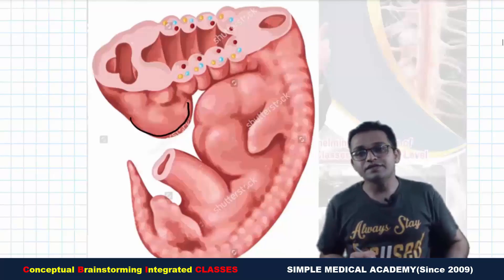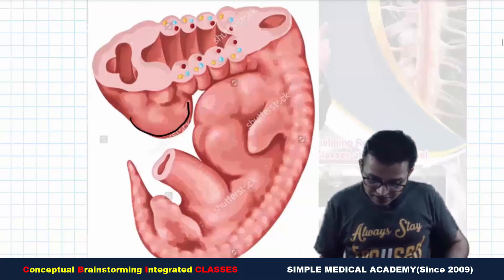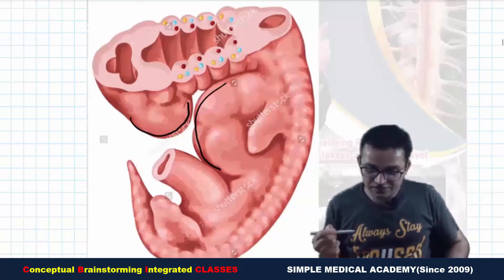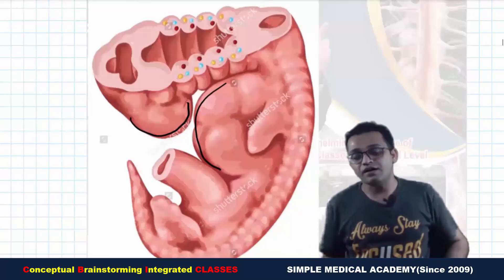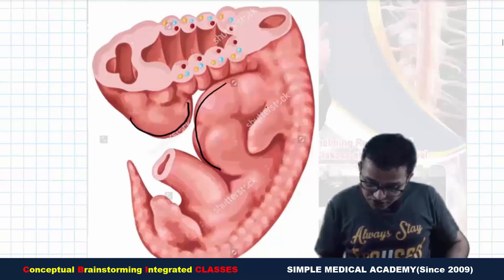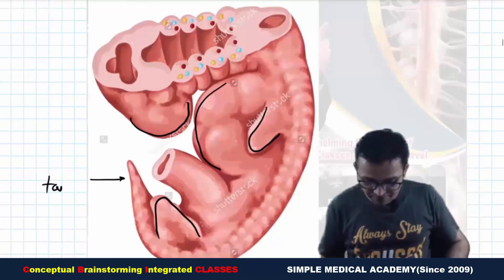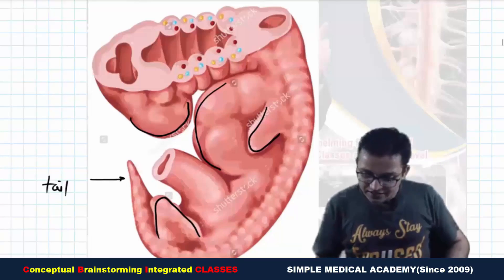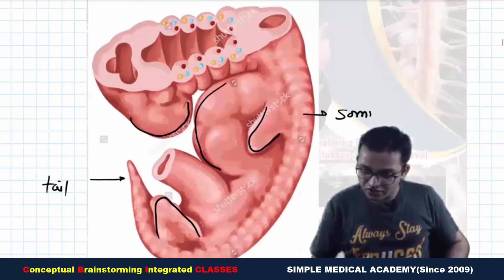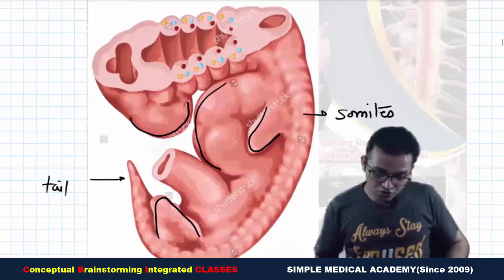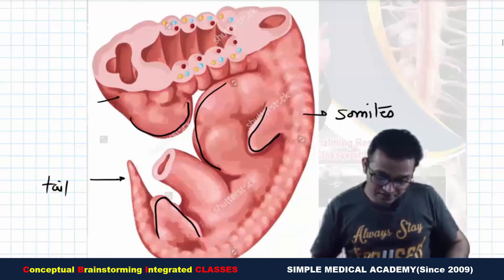This bulge is known as the head bulge, and here is another bulge known as the cardiac bulge. Here is the upper limb and the lower limb. This is the tail part, and these are the segmented structures known as somites.